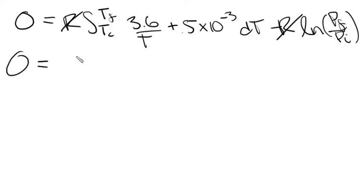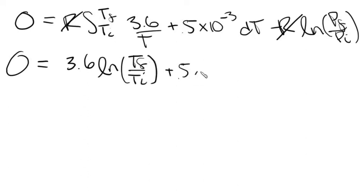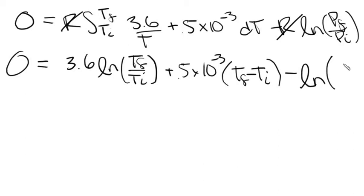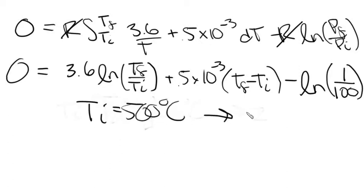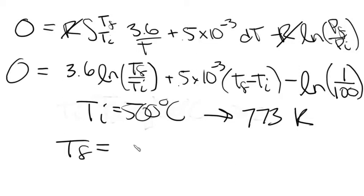So we have 0 = 3.6·ln(T_f/T_i) + 0.5×10⁻³(T_f − T_i) − ln(1/10). The inlet temperature is 500°C = 773 K. Plugging that in for T_i and solving for T_f, the outlet temperature comes out to 231.6 K.